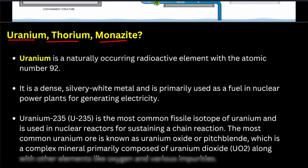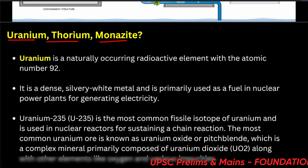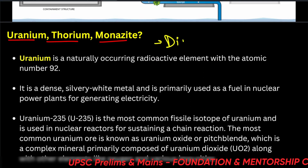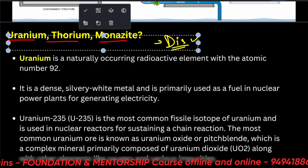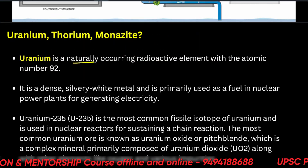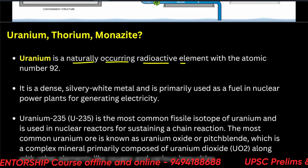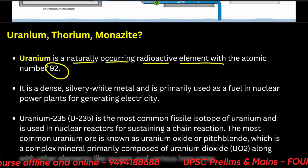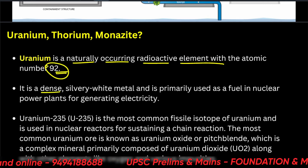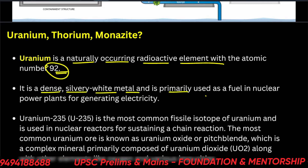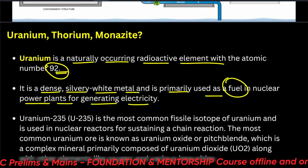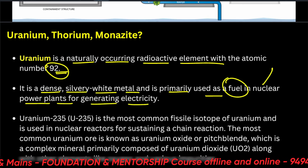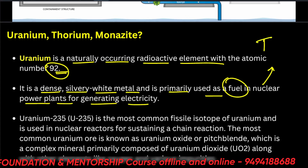Let us begin with uranium, thorium, and monazite. We need to know what these are, their distribution, their function, and their ores. Uranium is a naturally occurring radioactive element with atomic number 92. It is a dense silvery-white metal primarily used as a fuel in nuclear power plants for generating electricity. The type of nuclear reaction it participates in is nuclear fission.